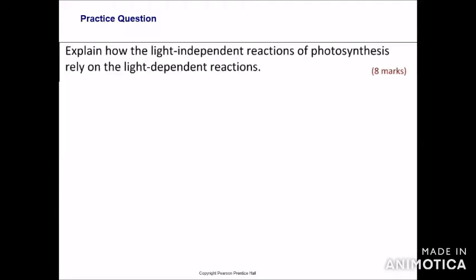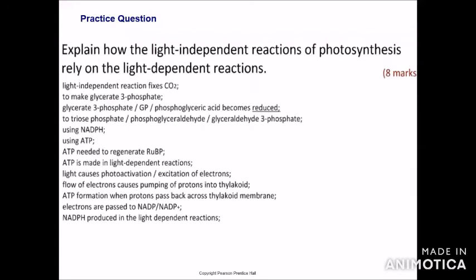The next question: explain how the light-independent reactions of photosynthesis rely on the light-dependent reactions. Light-independent reactions fix carbon dioxide to make glycerate-3-phosphate, which is reduced to triose phosphate using NADPH and ATP. ATP needed to regenerate ribulose bisphosphate is made in the light-dependent reaction. Light causes photoactivation of electrons; flow of electrons causes pumping of protons into the thylakoid membrane; ATP is formed when protons pass back across the thylakoid membrane. NADPH produced in the light-dependent reaction goes to the Calvin cycle.